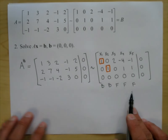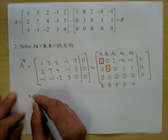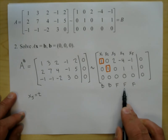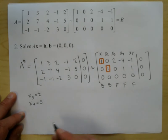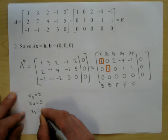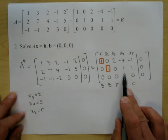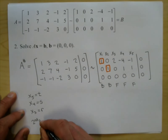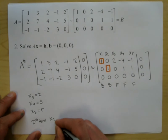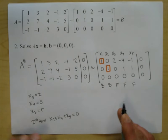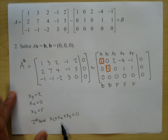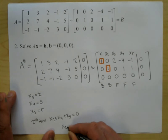We have three free variables. I'm going to let x5 equal t, x4 equal s, and x3 equal r. From the second row I get the equation x2 plus x4 plus x5 equals zero. Since x4 is s and x5 is t, x2 equals negative s minus t.